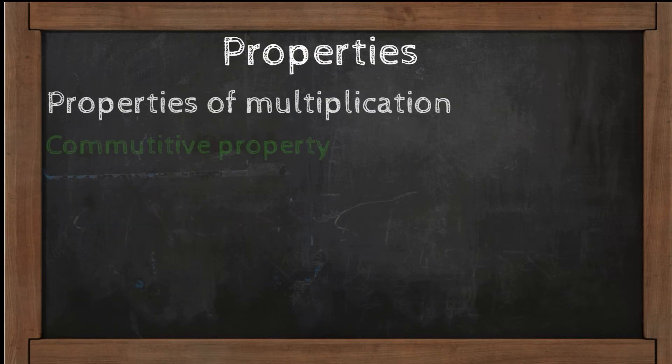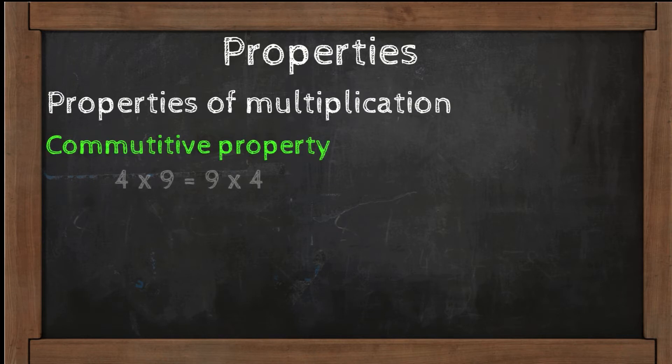Properties of multiplication. Commutative property: change the order of factors and the product stays the same. 4 times 9 equals 9 times 4.